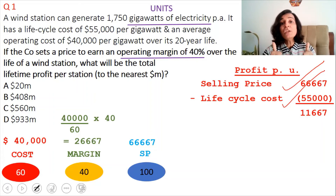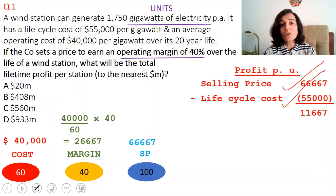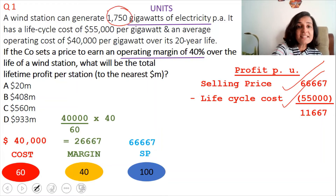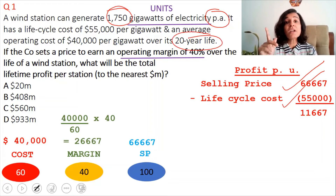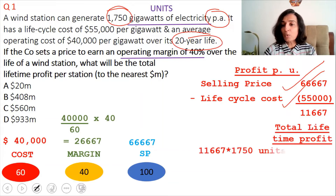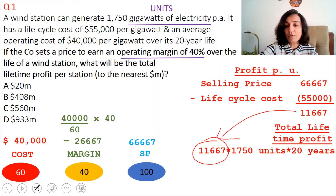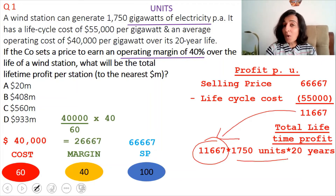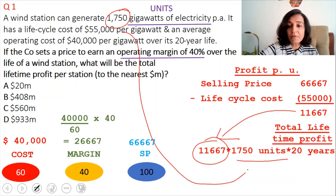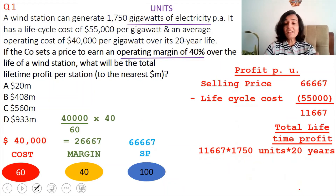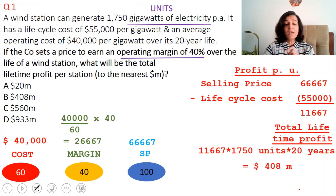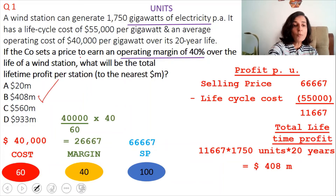What is the lifetime profit? We manufacture 1,750 units per annum for 20 years. So total lifetime profit = 11,667 × 1,750 × 20 = $408 million. The right answer is option B.